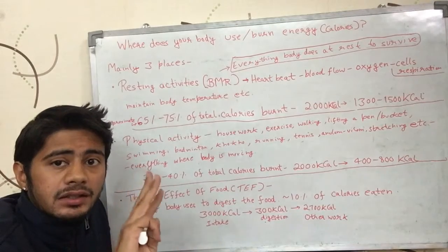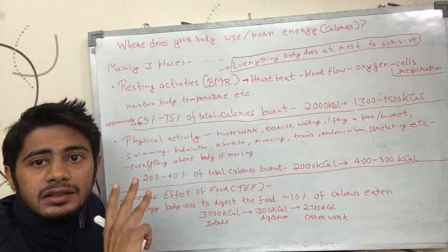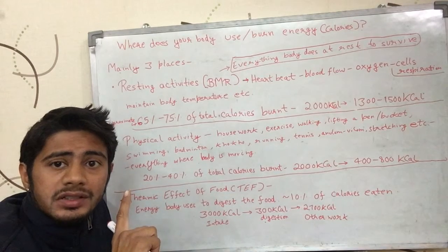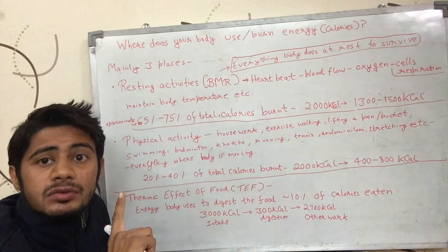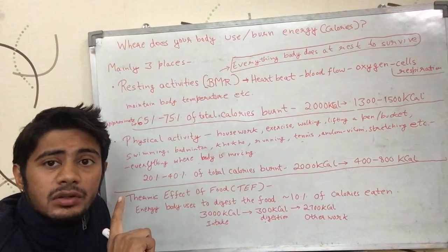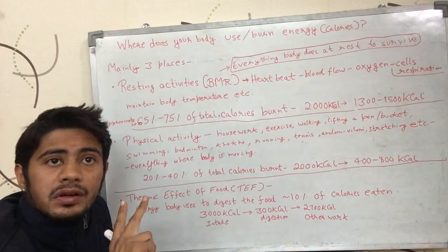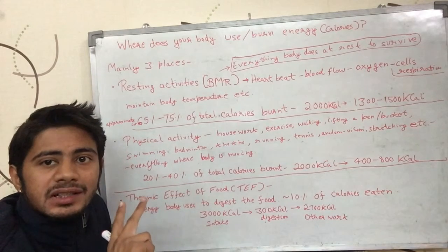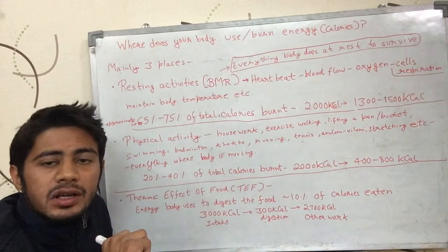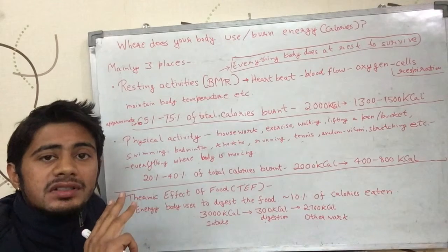The energy that the body burns can be divided into three main parts. First is the energy the body burns when you are not doing anything — when your body is not even moving, like when you are resting in bed. Second is when you are moving your body doing physical activity like walking, running, exercising, or doing housework. Third is the energy the body needs to digest the food you ate.